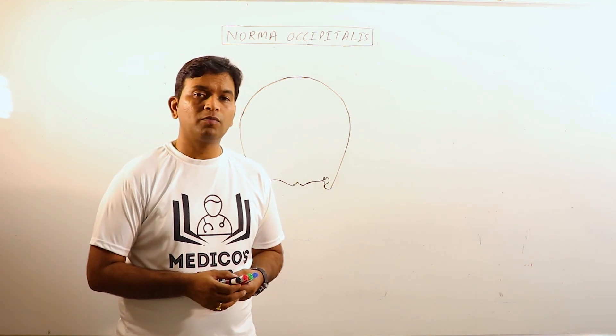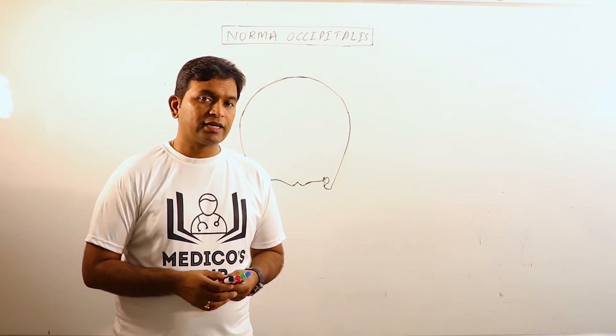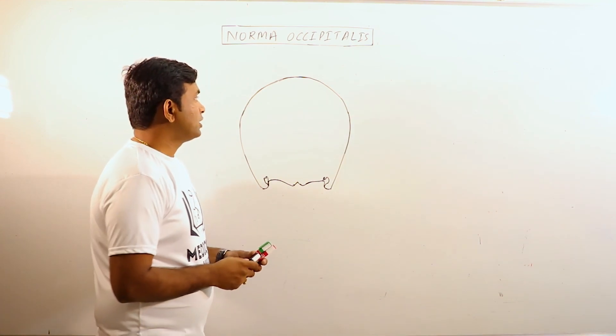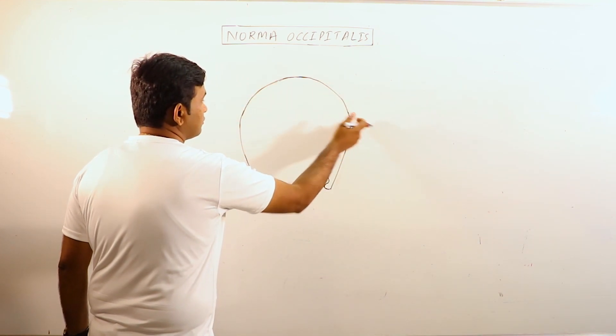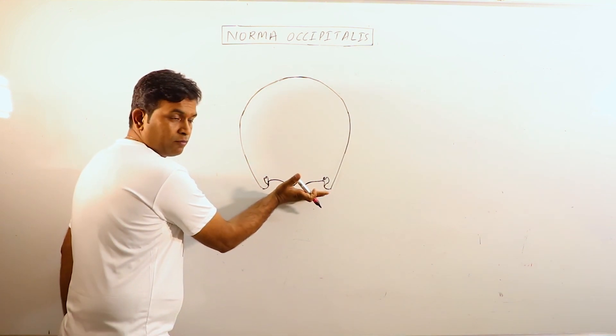Today we are going to discuss the Norma Occipitalis. What is Norma Occipitalis? It is the external view of the skull when you observe it posteriorly. It appears convex from above, convex from lateral sides and flattened from below.